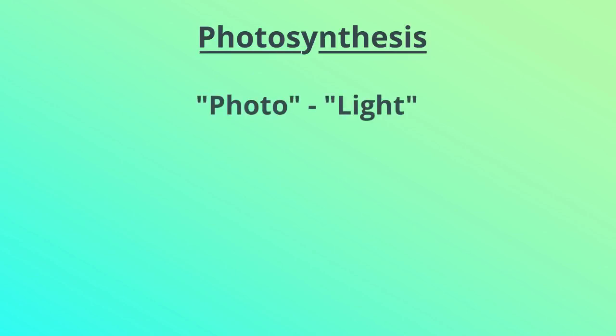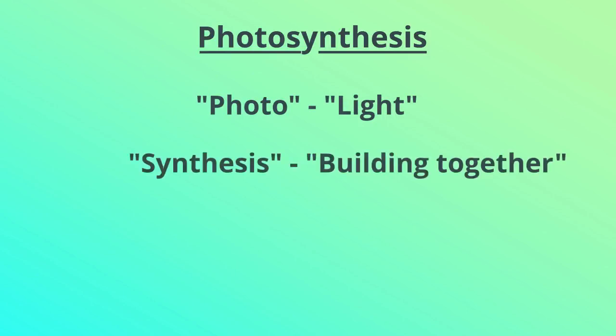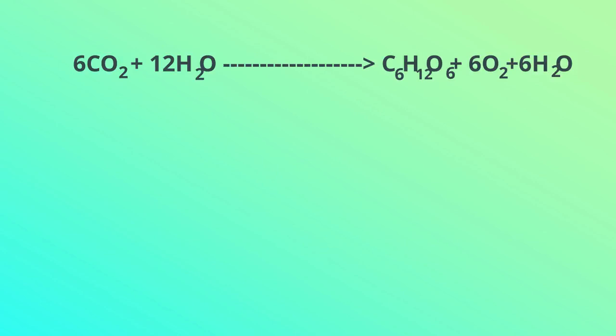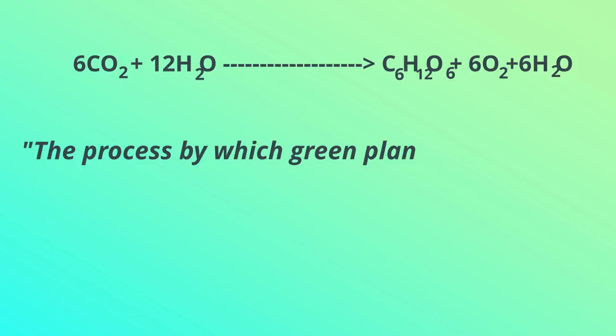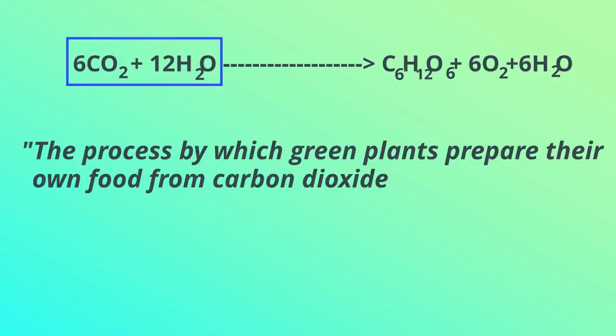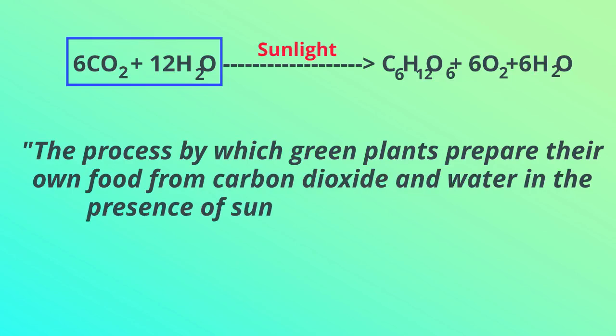The term 'photo' means light and 'synthesis' means building together. Thus, photosynthesis means building up with light. We can also define photosynthesis as the process by which green plants prepare their own food from carbon dioxide and water in the presence of sunlight and chlorophyll.